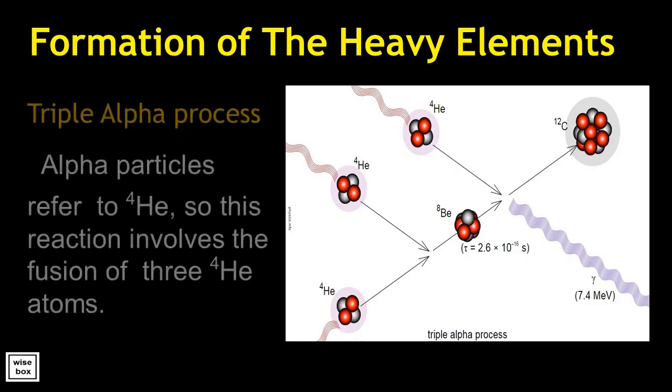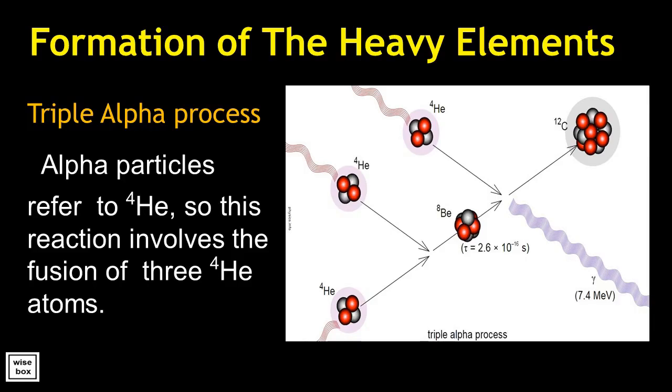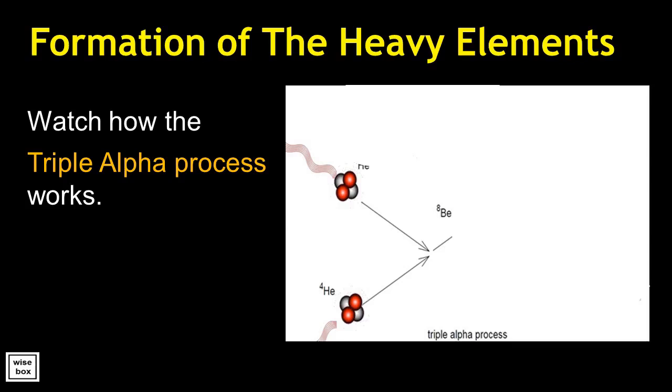In the triple alpha process, the alpha particles refer to helium-4. Thus, this reaction involves the fusion of three helium-4 atoms. Let us watch how the triple alpha process works.